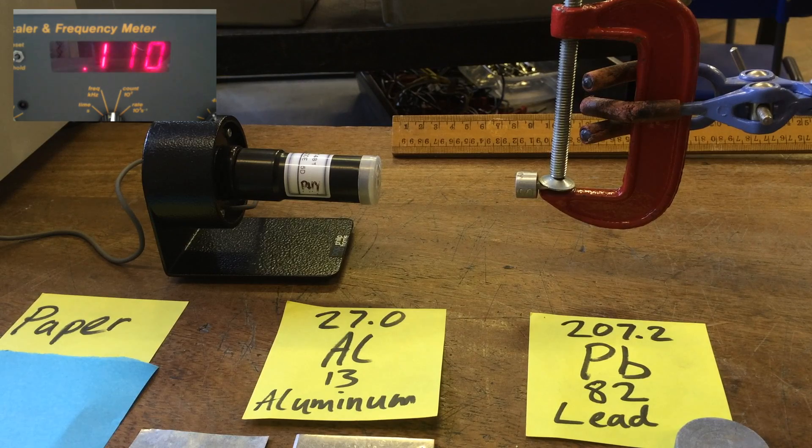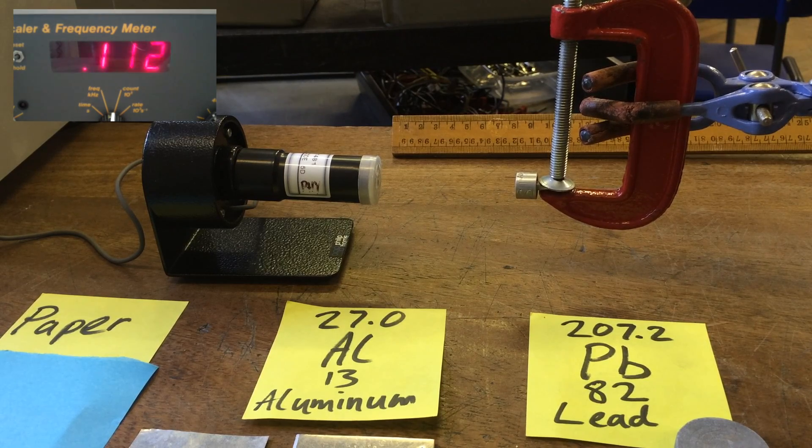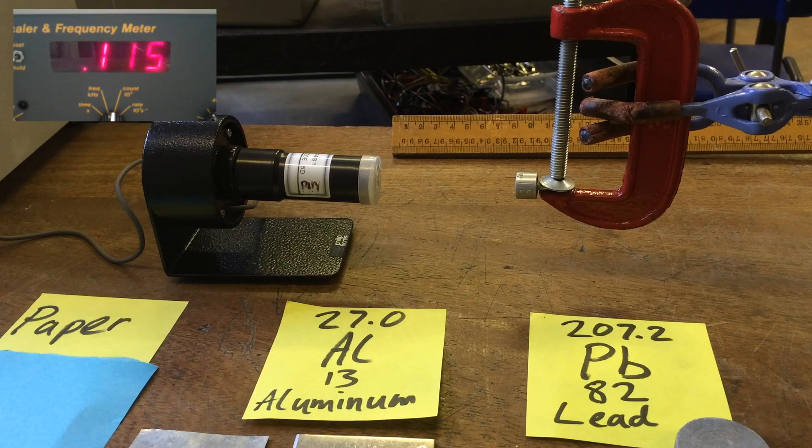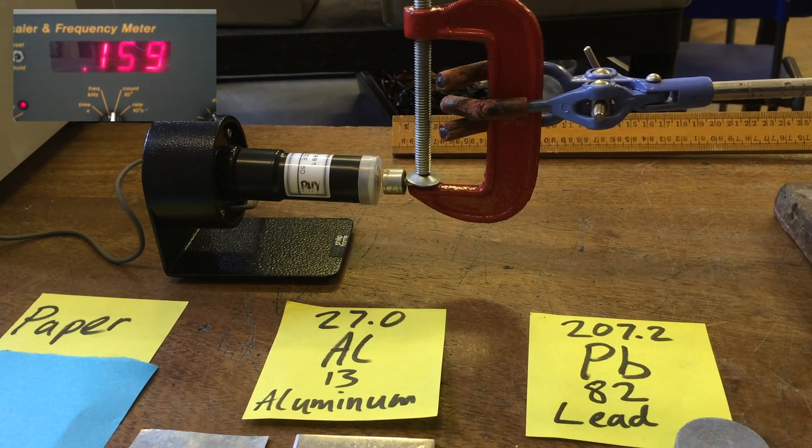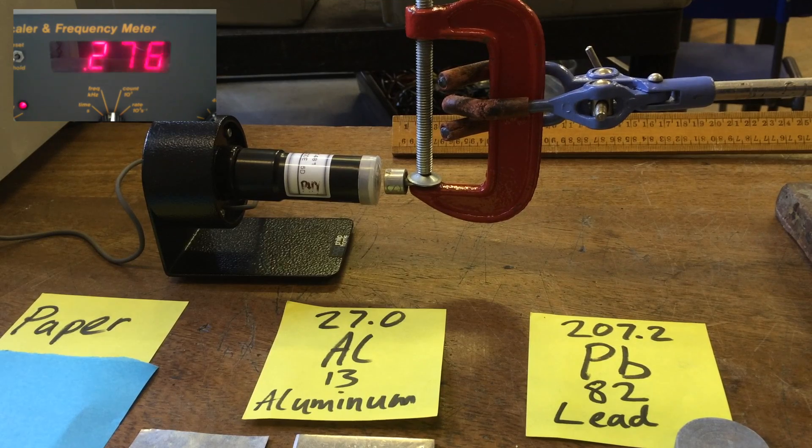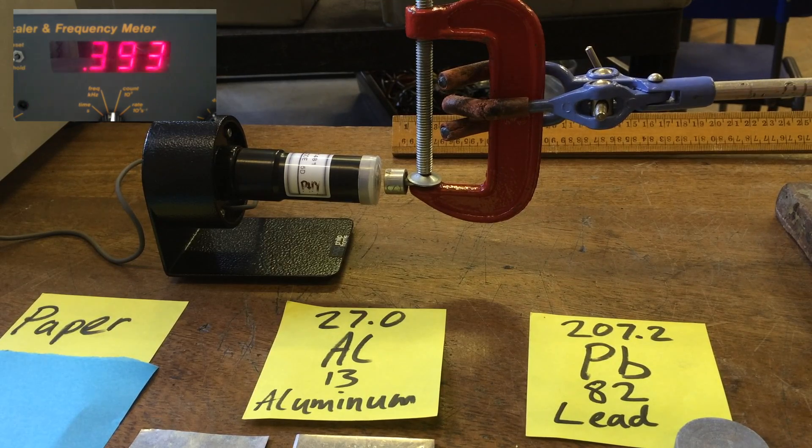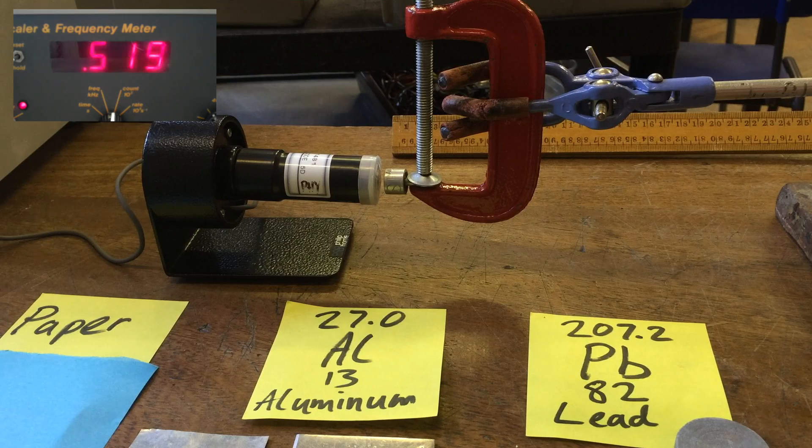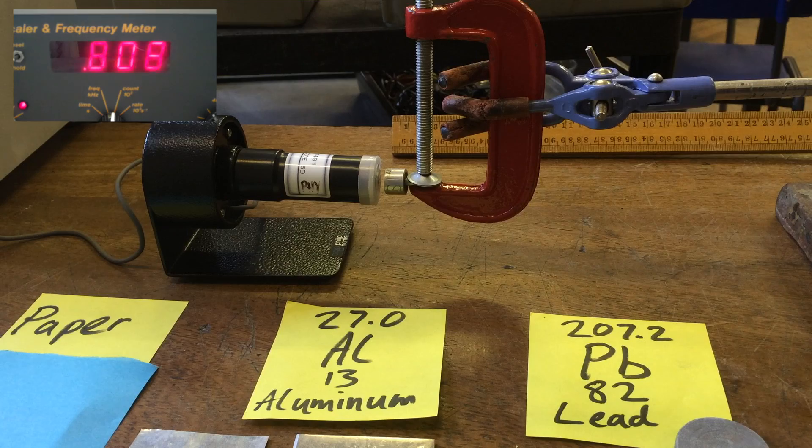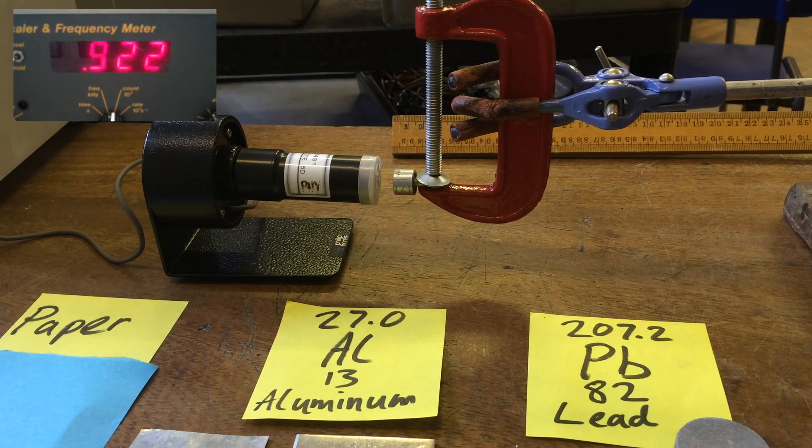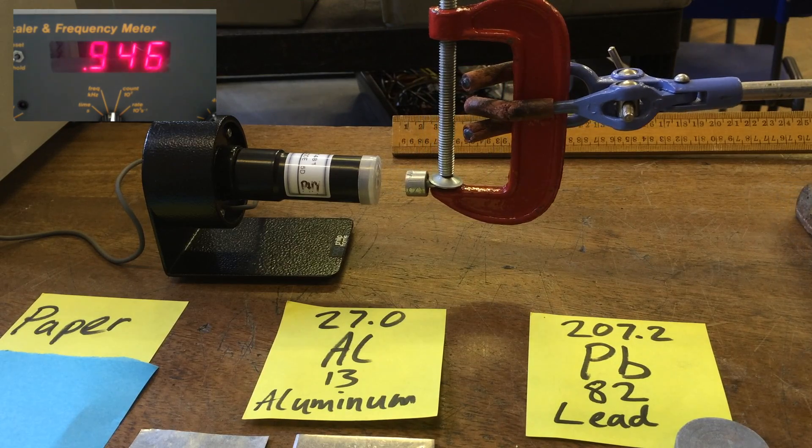We're going to keep an eye on the Geiger counter as we move it a little bit closer. The Geiger counter is now going crazy, counting loads and loads. But as we move it away, the amount gets smaller, and when it gets to about two or three centimeters, it's pretty much stopped completely.